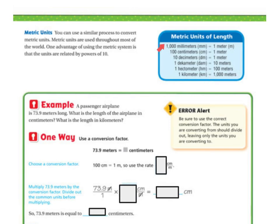So if you're looking, I'm multiplying essentially by the powers of 10. So for example, a passenger airplane is 73.9 meters long. What is the length of the airplane in centimeters, and what is the length in kilometers? Error alert: Be sure that you use the correct conversion factor. The units you are converting from should divide out, leaving only the units that you are converting to.